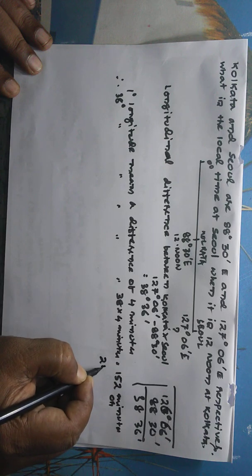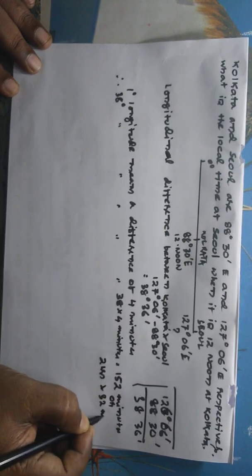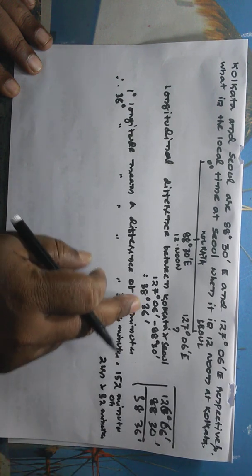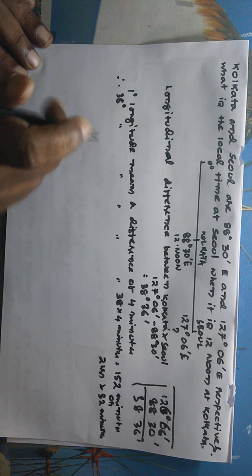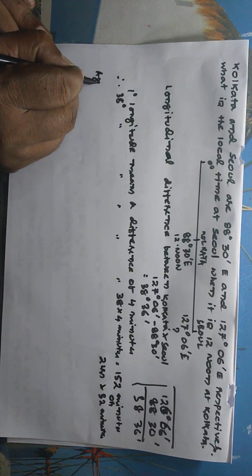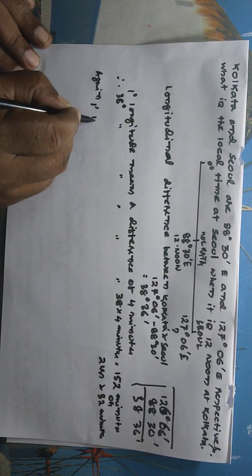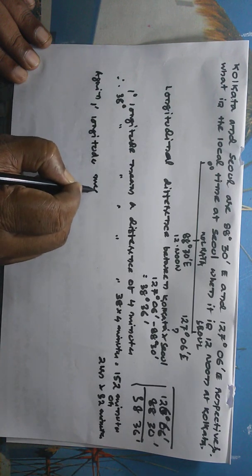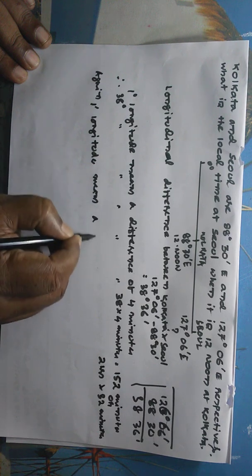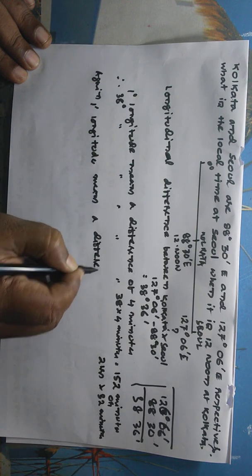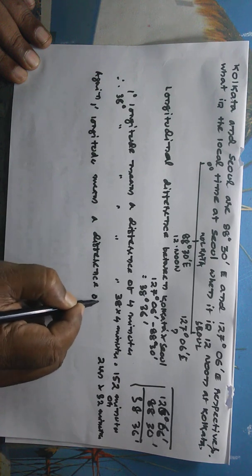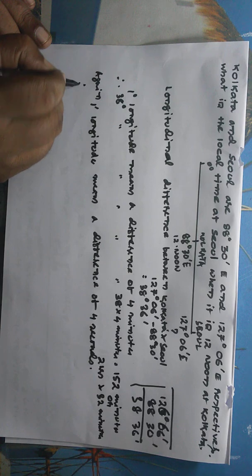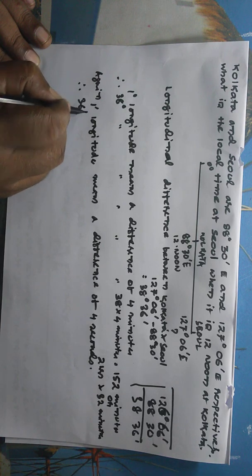But we are not complete yet because this portion is left. So we will write again: 1 minute longitude means a difference of 4 seconds. Therefore 36 minute longitude means a difference of 36 into 4 seconds.